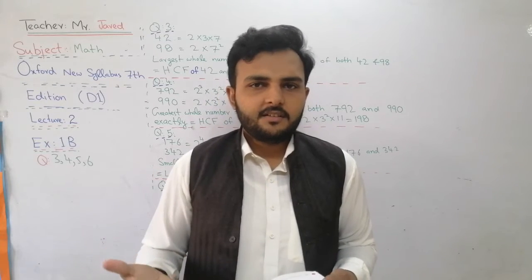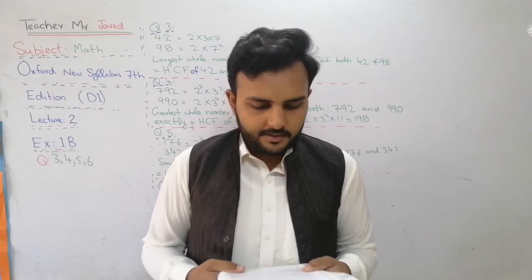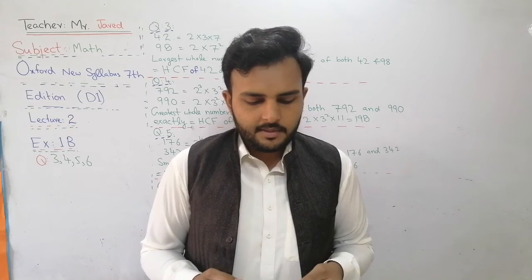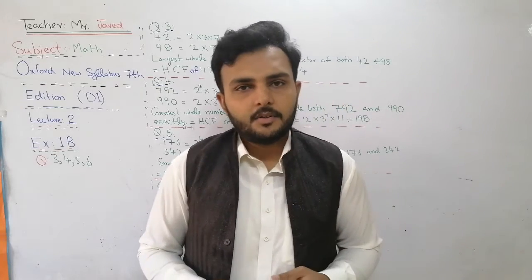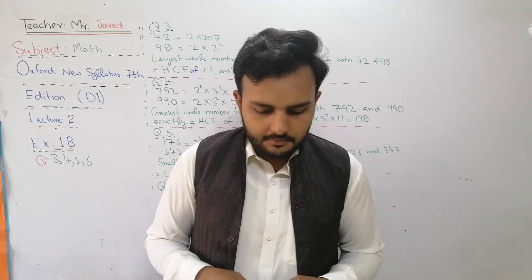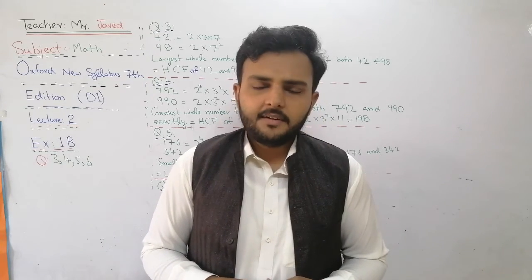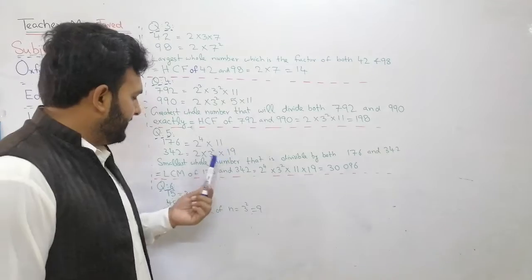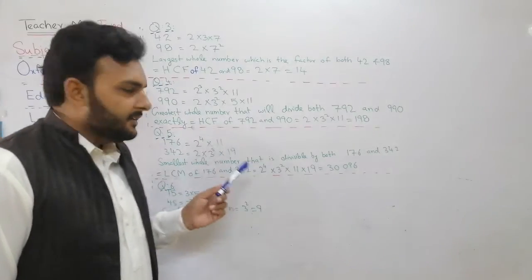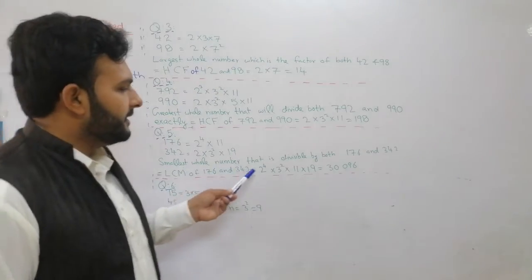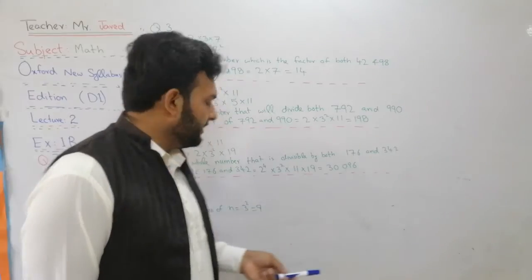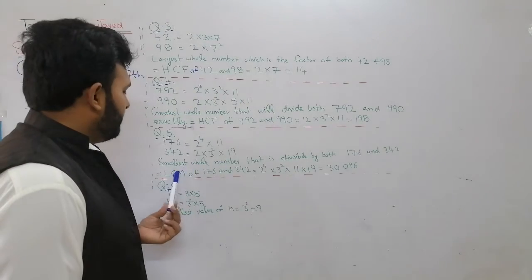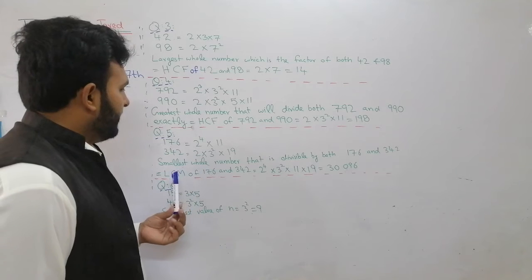Just look at the keywords 'smallest' and 'greatest' — they give the proper hint for the question. Find the smallest whole number that is divisible by both 176 and 342. The smallest whole number that is divisible by both 176 and 342 is equal to the LCM of 176 and 342. If we talk about the greatest, that would be the HCF.